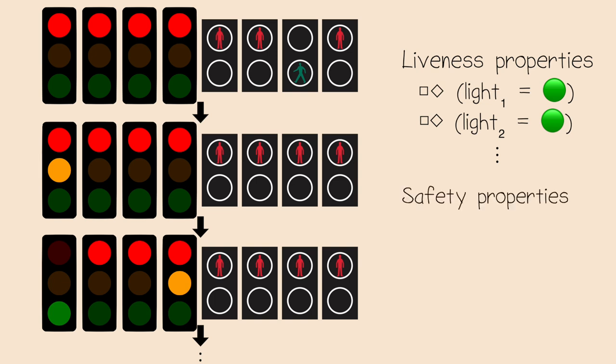Further, there are safety properties. These can be disproven by a finite trace. For example, whenever light one is green or yellow, light two must be red, preventing a collision. If this ever happens, we have a finite trace from the start configuration until the safety criteria stops holding. The notation I use to describe these properties is a temporal logic. Specifically, I use linear temporal logic.